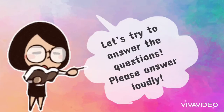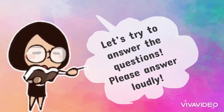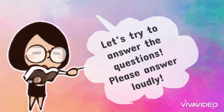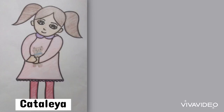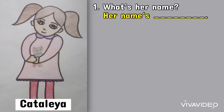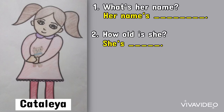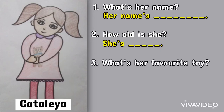Good job. Next, I want you to try to answer the questions. I will read the question and I need you to answer the question orally. So, are you ready? Question number 1: What's her name? Very good. Question number 2: How old is she? Good job. Number 3: What's her favourite toy?